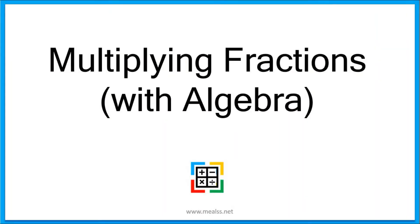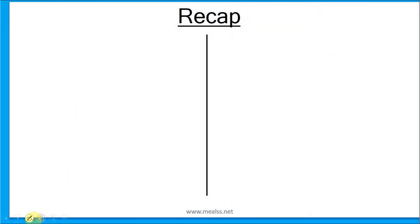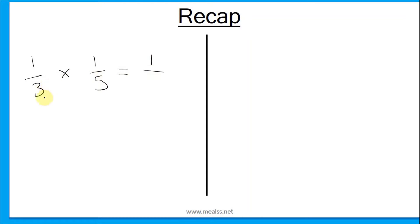Multiplying fractions with algebra. As a quick recap, let's have a go at two questions. First question is 1 over 3 multiplied by 1 over 5. All we do with multiplying fractions is multiply the numerators: 1 times 1 is 1, and then multiply the denominators: 3 times 5 is 15.